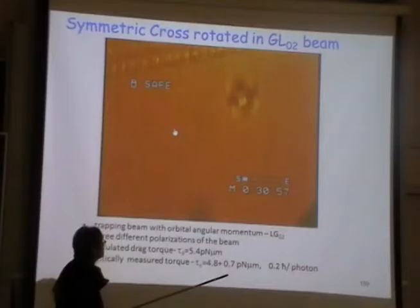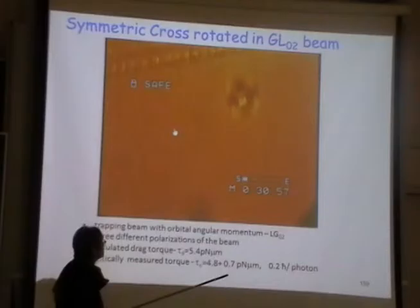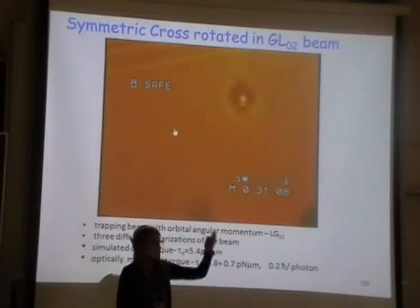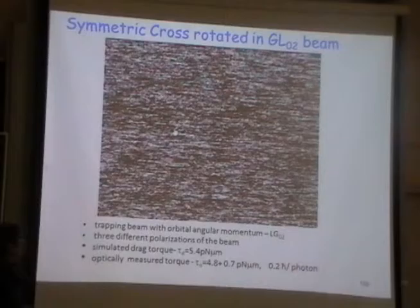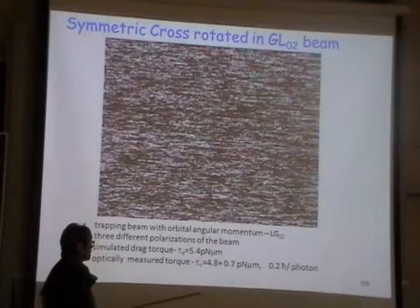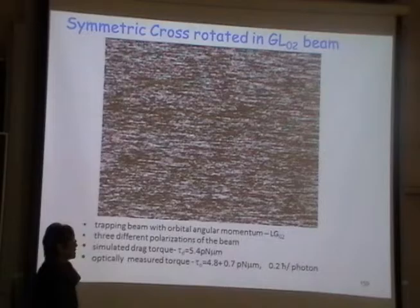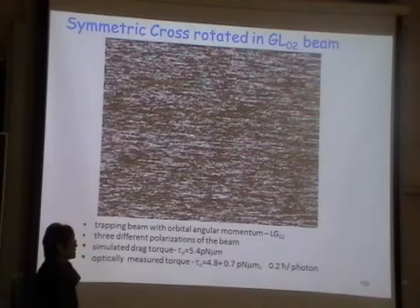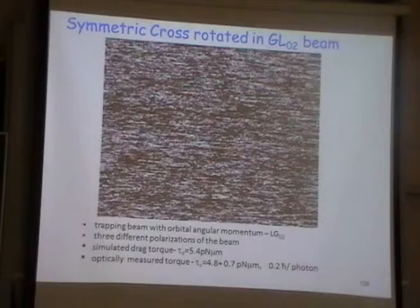We are using the trapping beam with orbital angular momentum — LG02 — and three different polarizations: linearly polarized, left-handed circularly polarized, and right-handed circularly polarized, measuring the torque each time. The simulated drag torque is about 5.4 pN·μm. The optically measured torque is 4.8 ± 0.7 pN·μm — they agree pretty well. We are transferring about 0.2 ħ per photon.